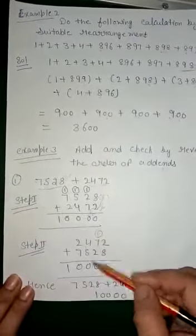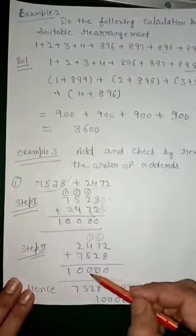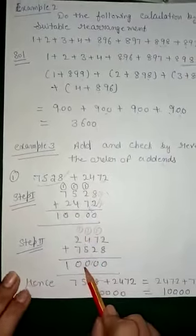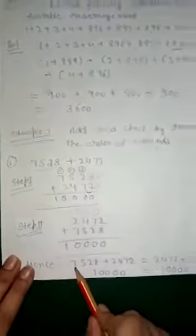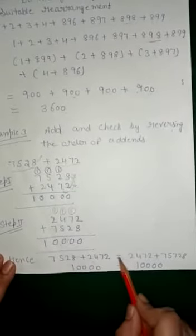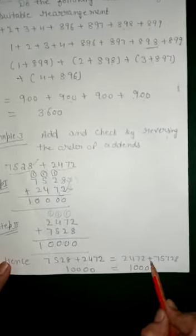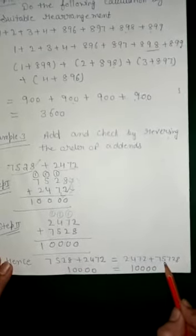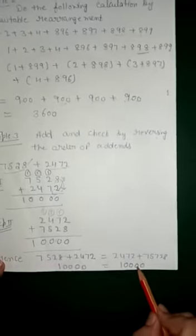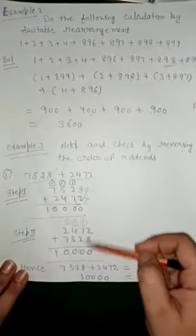Continuing: 7 + 2 + 1 = 10, write 0 carry 1. 4 + 5 + 1 = 10, write 0 carry 1. Then 7 + 2 + 1 = 10. The result is again 10,000. Hence 7,528 + 2,472 = 2,472 + 7,528 = 10,000. The answer is the same in both orders — reversing the addends has no effect on the answer.